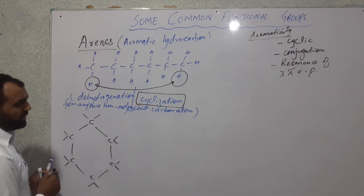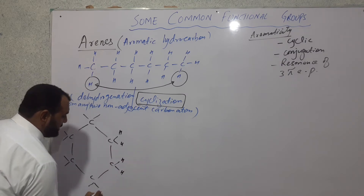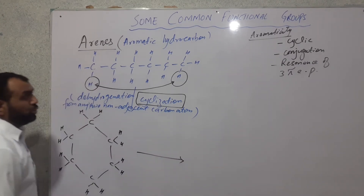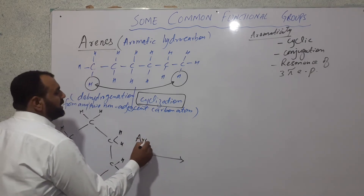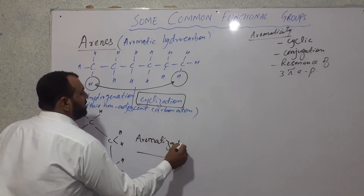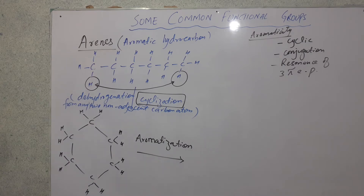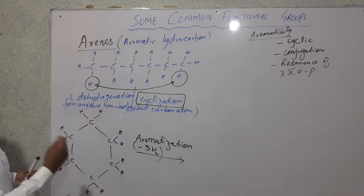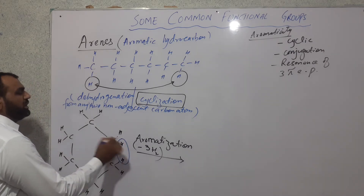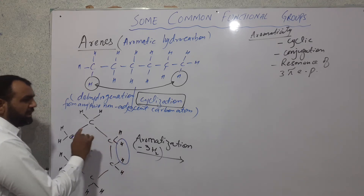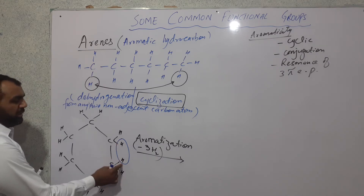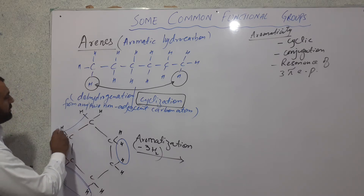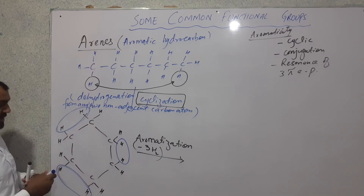This six-membered cyclohexane compound has all its hydrogen atoms intact — it is alicyclic. We pass this through a process called aromatization, which is the conversion of an alicyclic compound into an aromatic one. For that, we again dehydrate by removing three hydrogen molecules. Since we need to develop conjugation, we remove hydrogen from adjacent carbon atoms to create double bonds.